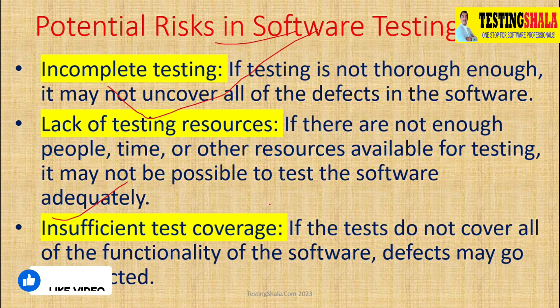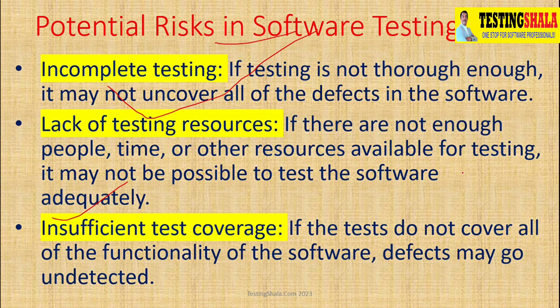The next one is insufficient test coverage. If we do not have the right coverage for a given functionality in a software, this becomes a higher risk. We should properly follow the review processes, come up with the right requirement traceability matrix, and work with various stakeholders so that we can cover enough test coverage and mitigate this potential risk.